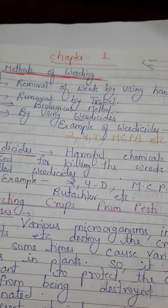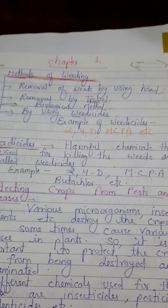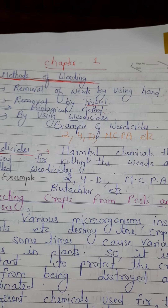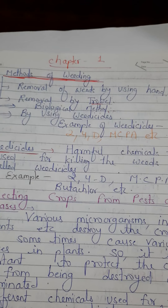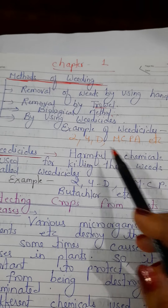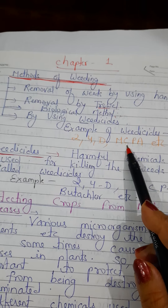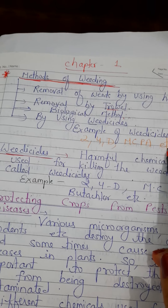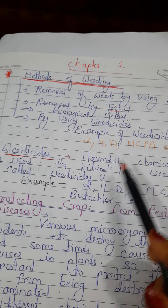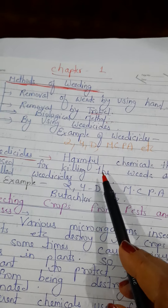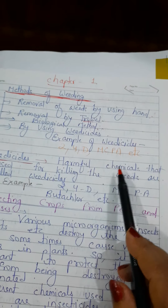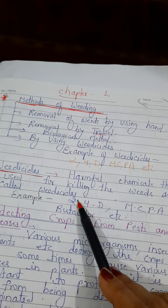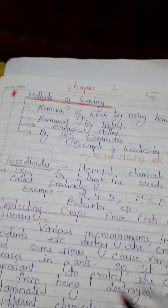Next is by using weedicides. Weedicides are chemicals used for killing weeds. Some examples are 2,4-D and MCPA. So weedicides are harmful chemicals that are used for killing weeds.